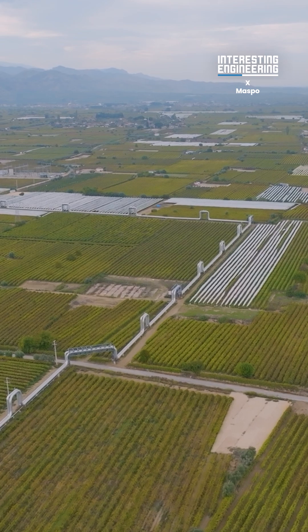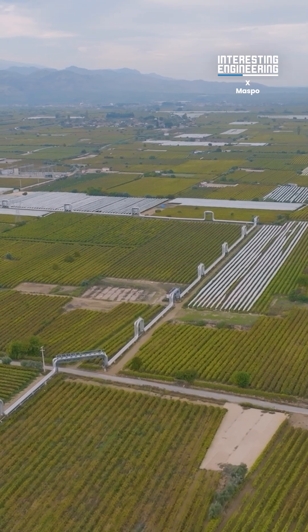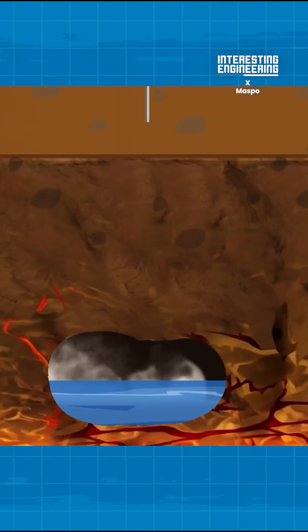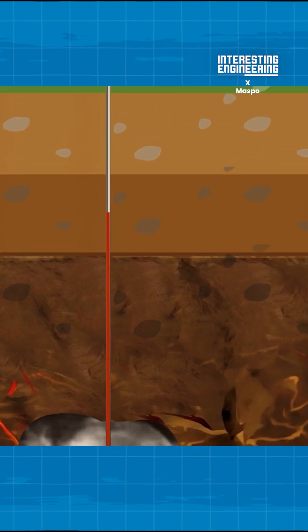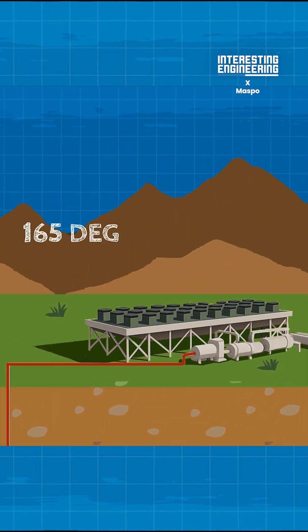During this process, no harm is done to the agricultural lands. Groundwater, or brine, is then extracted from the well. By the time it reaches the surface, its temperature reaches 165 degrees Celsius.